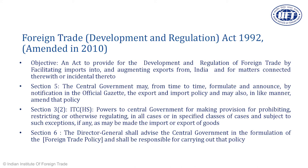Section 5 is the section which provides for the overarching powers. Section 3 sub-clause 2 is related to the various HS codes and their specific regulations — some products are restricted or prohibited and there are special rules governing those products, and that power is through section 3-2. Section 6 is basically the implementing provision under which the DGFT is implementing the policy.